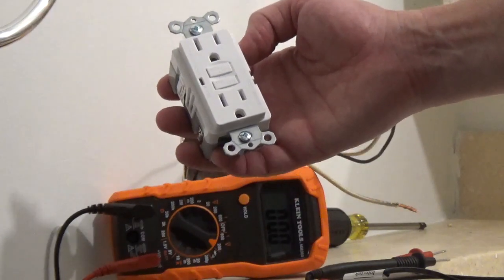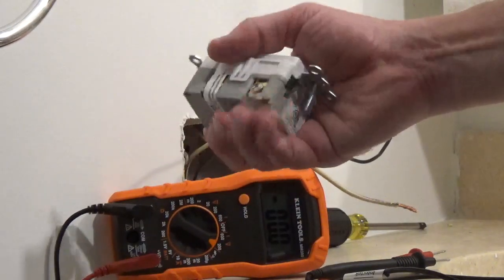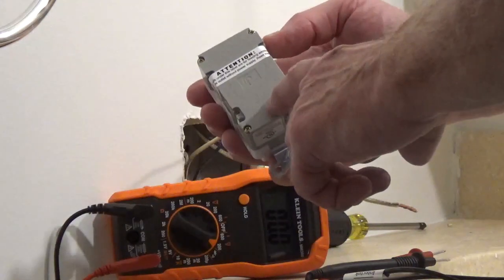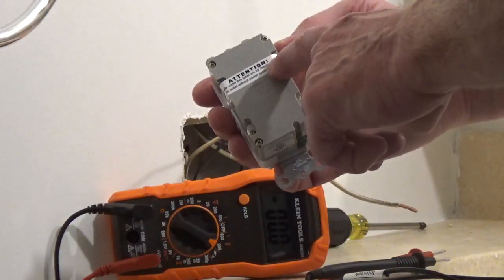I'm going to go over some tips to wire a GFCI. On the back of the GFCI, one side is going to say line, the other side is going to say load.